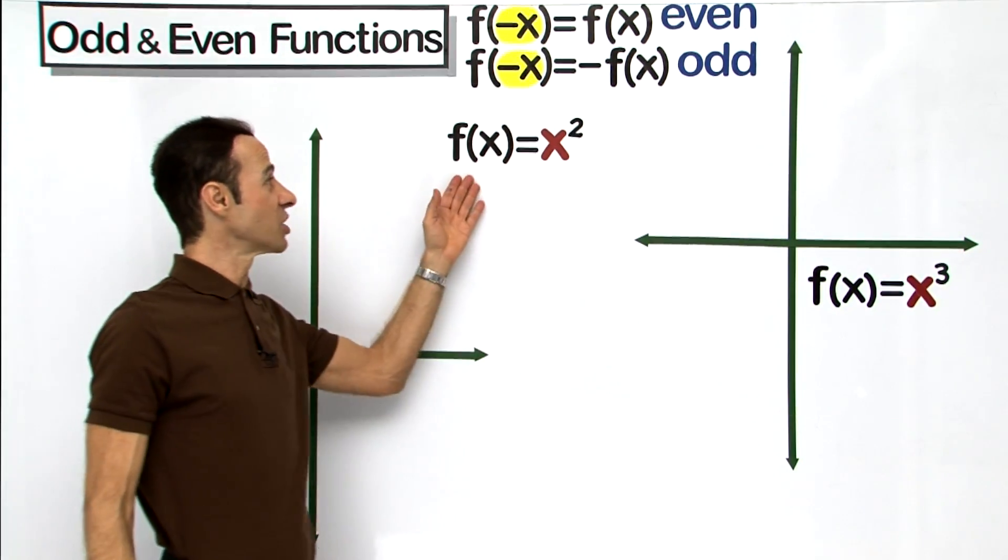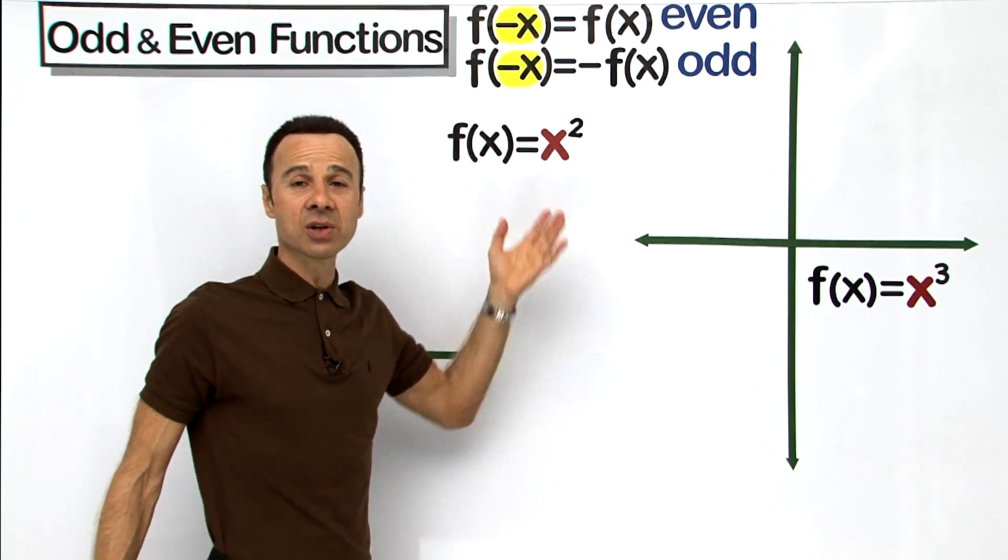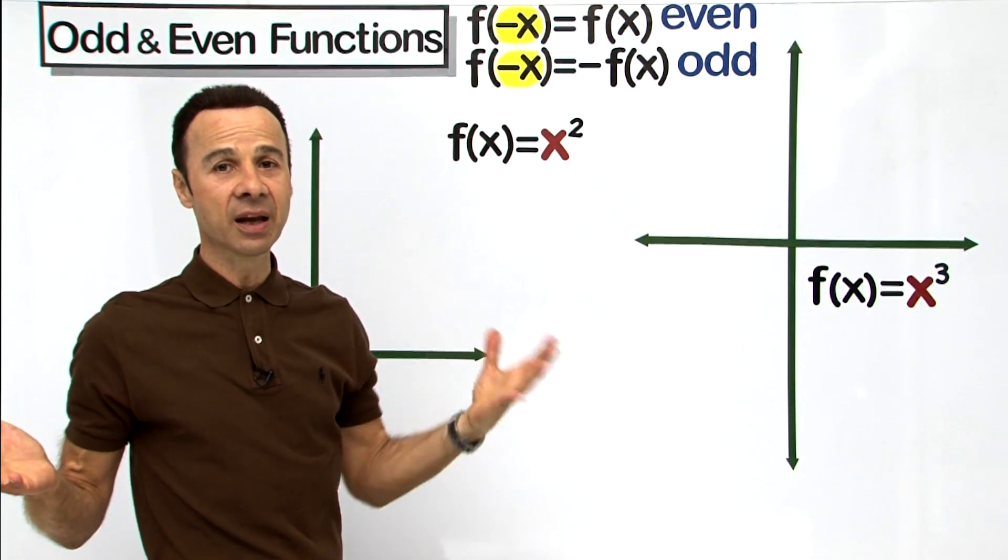So let's have a look at the first one, f(x) equals x squared. The question is, is it odd or is it even?